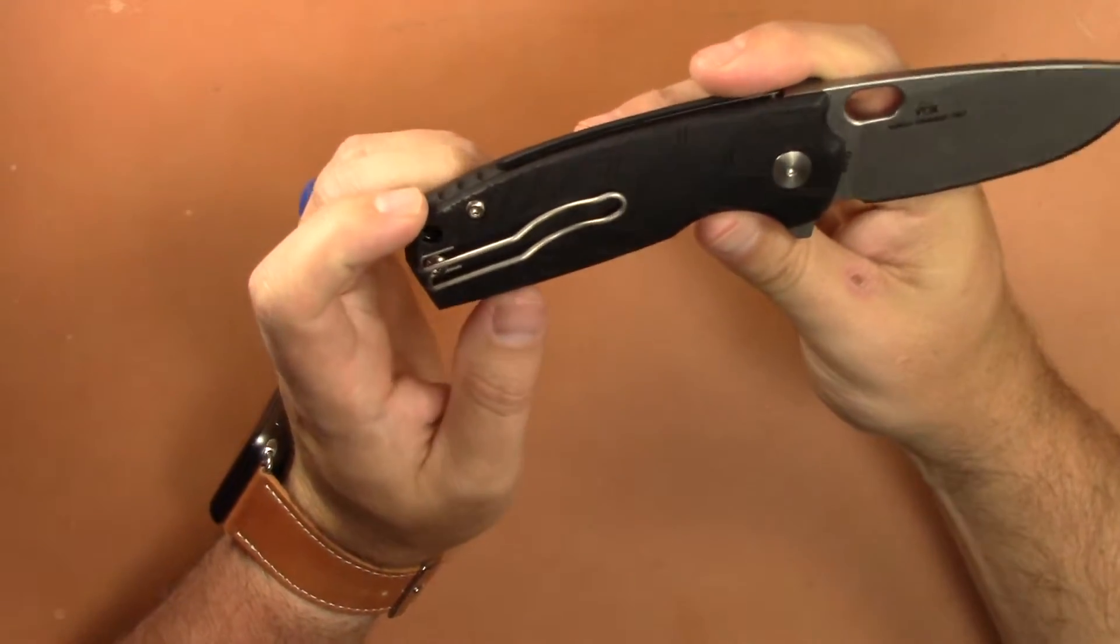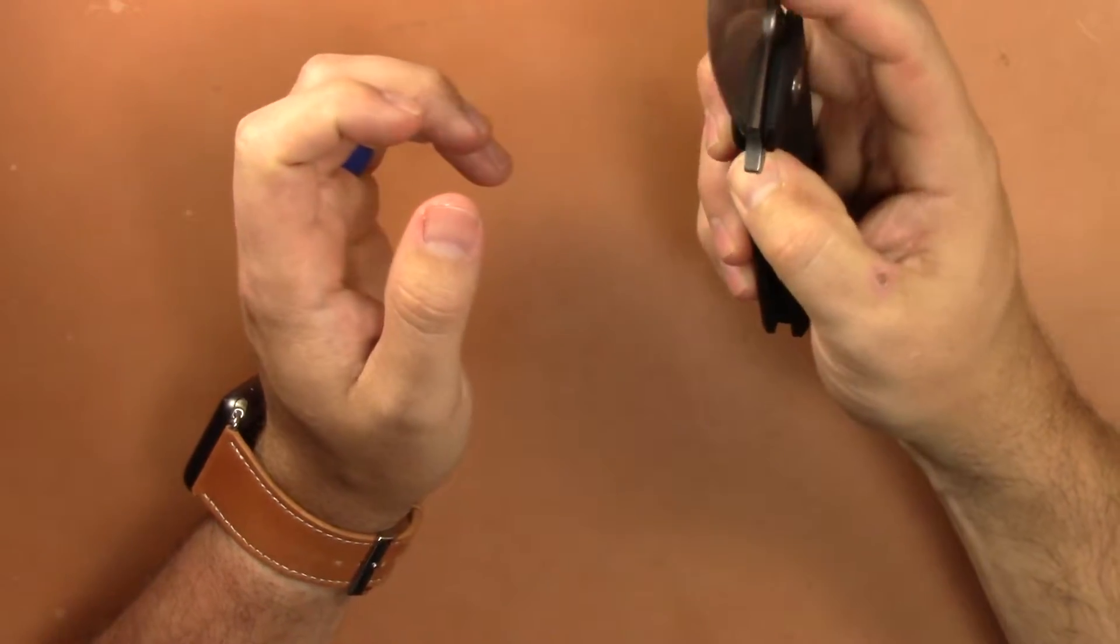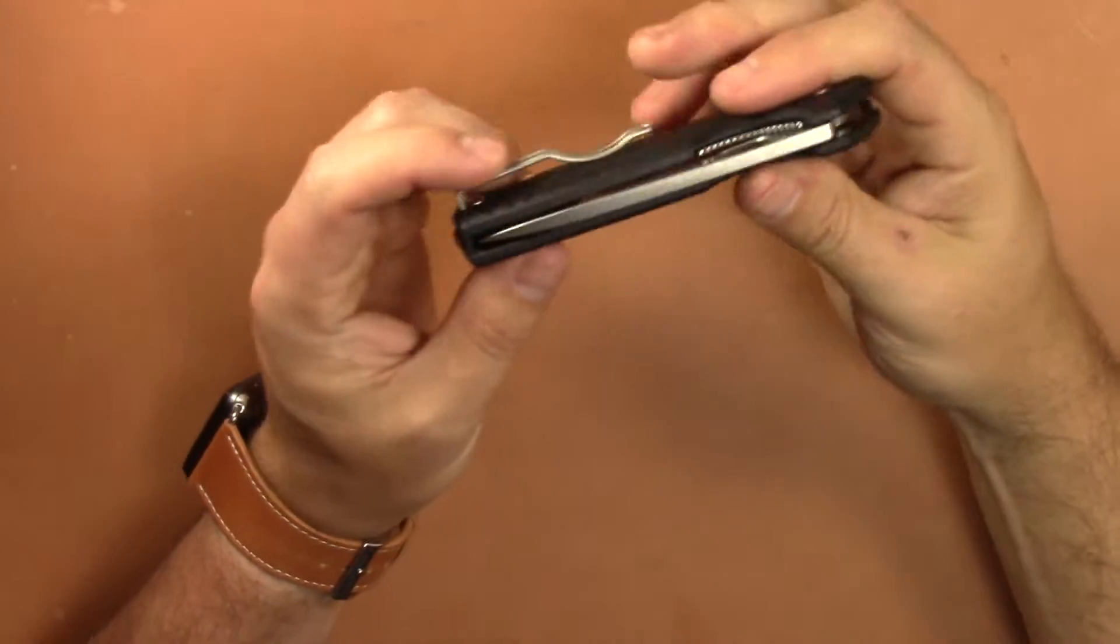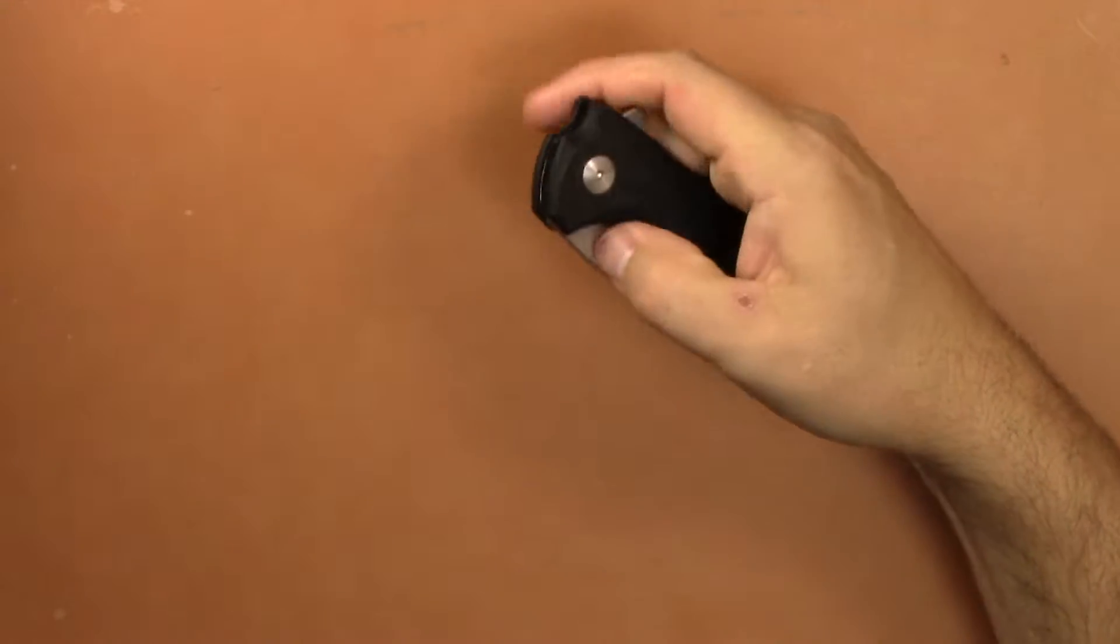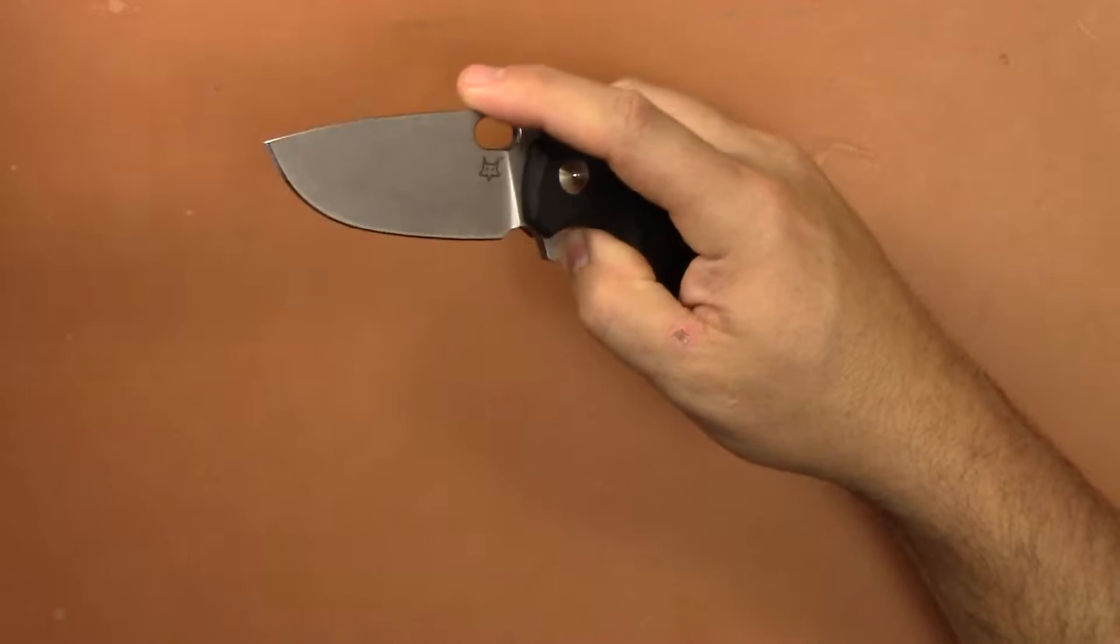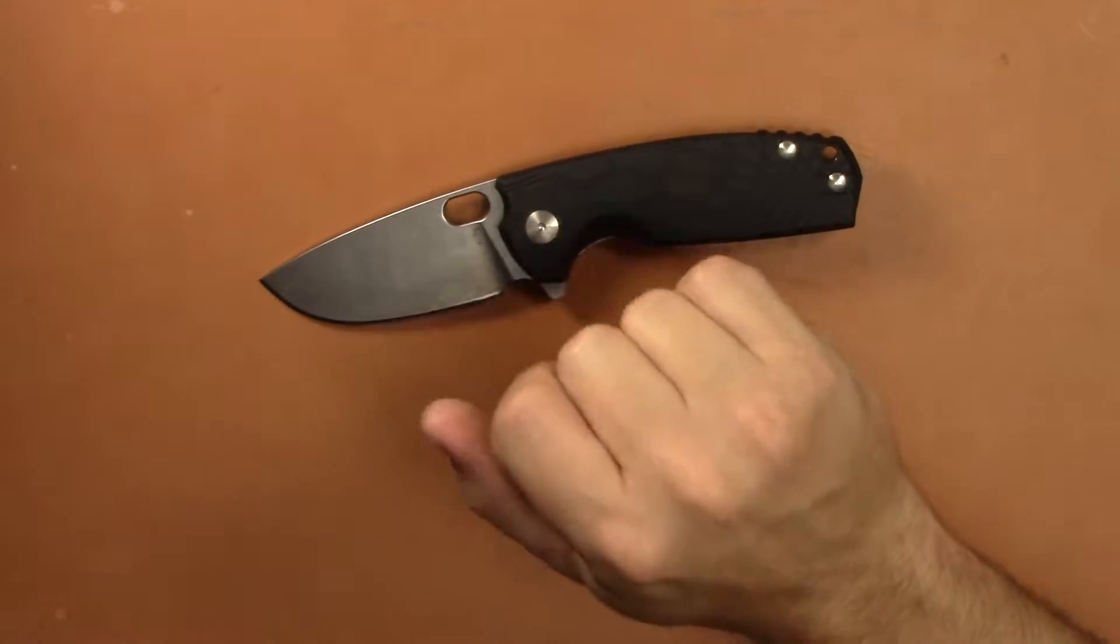The FRN is nice, I like the wire clip quite a bit, has a stainless steel liner lock and very smooth on bearings. Very smooth. You can middle finger flick it, you can use the thumb hole, and you can use the flipper. The deployment methods are awesome and they work well, and the detent is dialed in. Action is fantastic on this guy.